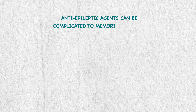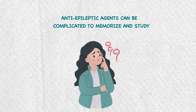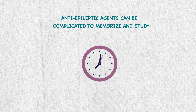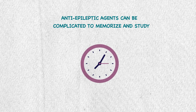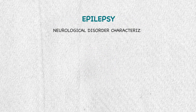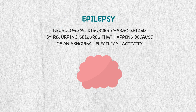Anti-epileptic agents can be complicated to memorize and study because of their different mechanisms of action and side effects, but here we will simplify them in seven minutes or less. First, what is epilepsy? It's a neurological disorder characterized by recurring seizures that happen because of abnormal electrical activity.